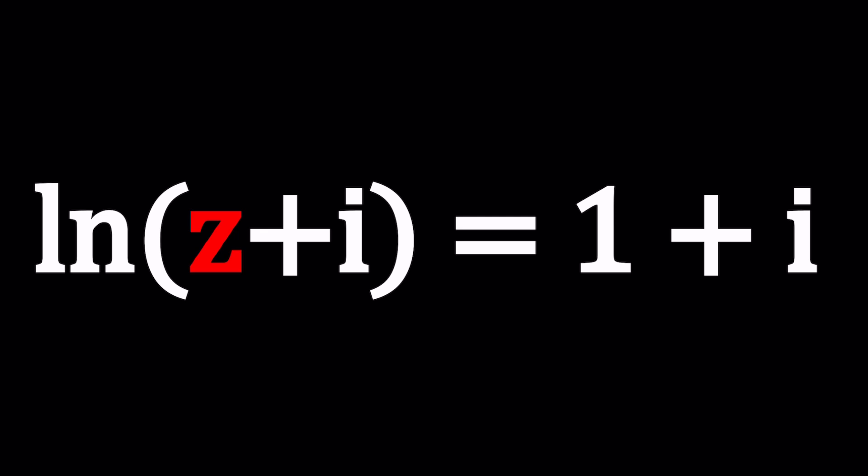There's a form which I rarely look at but time to time I'll check it out if I remember. So we have this equation ln of z plus i equals one plus i and we're going to be solving for z.